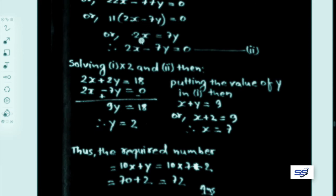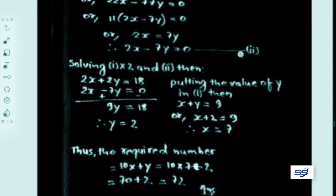Therefore 2x equals 7y. Let this be equation 2. Now solving both equations 1 and 2, we multiply equation 1 by 2.